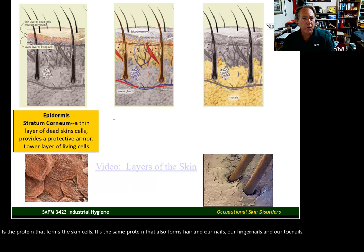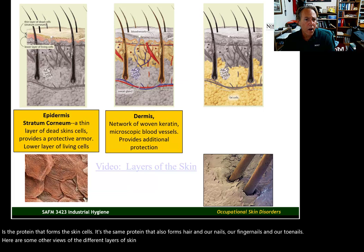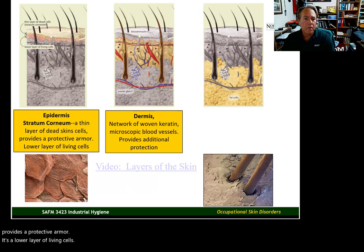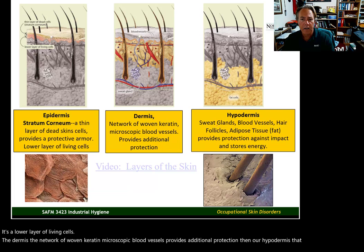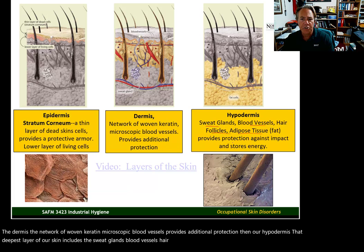Here are some other views of the different layers of skin. In the epidermis, the stratum corneum — a thin layer of dead skin cells — provides a protective armor over a lower layer of living cells. The dermis contains a network of woven keratin and microscopic blood vessels that provide additional protection. The hypodermis, the deepest layer, includes sweat glands, blood vessels, hair follicles, and fat tissue that provides protection against impact and stores energy.